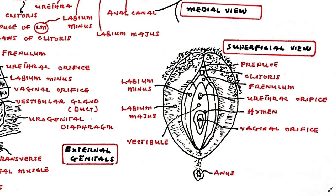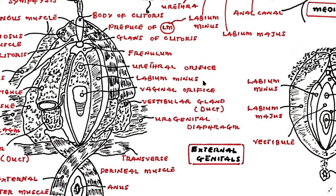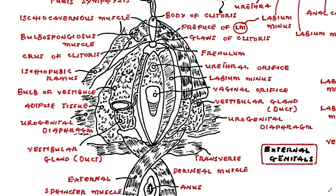The smaller labia can be followed anteriorly to the glans and body of the clitoris. Folds of the labia minora pass over the head and body of the clitoris, forming the prepuce and the frenulum. Unlike the labia majora, the labia minora merge posteriorly over the perineal body; this fusion is indistinct after sexual activity begins.